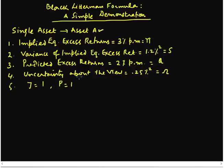The parameters for asset A are given to us here. We have the implied equilibrium excess returns equal to 3% per month. In terms of the Black-Litterman formula, this is equivalent to our pi. We also have the variance of implied equilibrium excess returns of 1.2% squared, which in terms of the Black-Litterman formula is equivalent to our S.